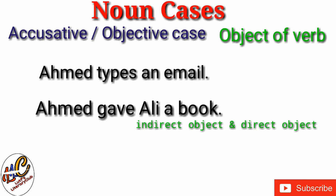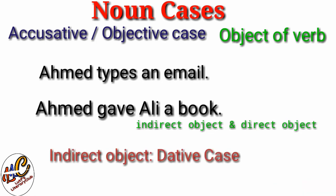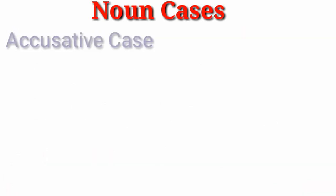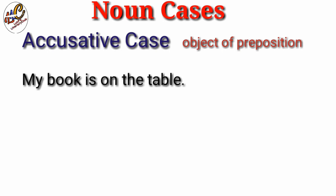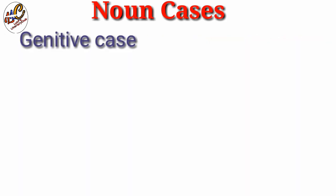Whenever there is an indirect object in a sentence, we call it dative case. Now let's talk about accusative case. When a noun functions as an object of a preposition, we call it accusative case. Look at the sentence: my book is on the table. Table is the object in this sentence. Before table comes preposition 'on' and table has no relationship with the verb.